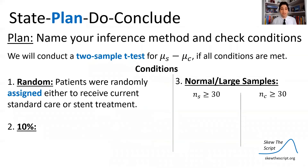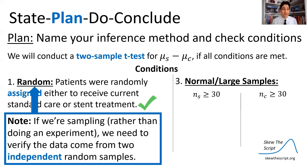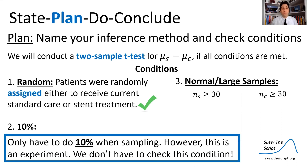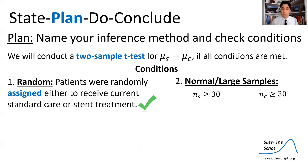For the random condition: patients were randomly assigned to either receive control or the new stent treatment, so we're good — we will have an unbiased result. Note that if we're sampling rather than doing an experiment, we need to verify two independent random samples since we have a two-sample test. The 10% condition doesn't apply here because this is an experiment, not sampling. For the normal/large samples condition, both sample sizes were greater than 30, so we're good.